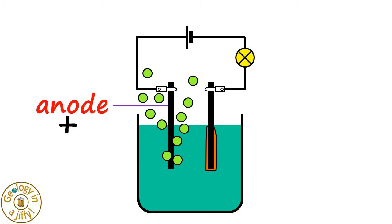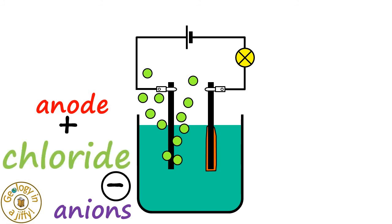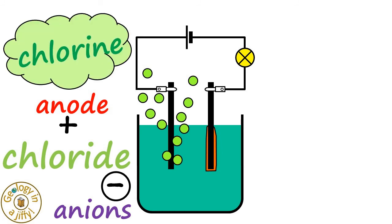And at the positively charged anode, we have negatively charged chloride ions being attracted to it. These chloride anions then bond with each other to form molecules of chlorine gas.